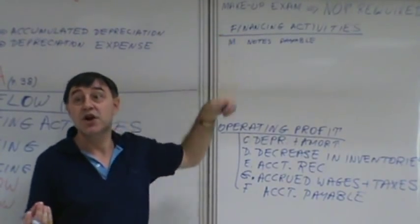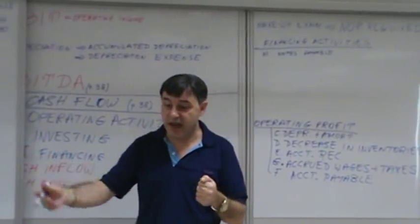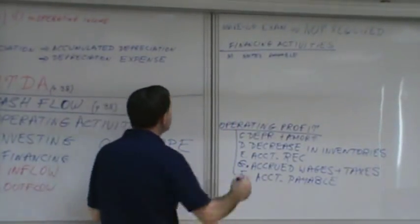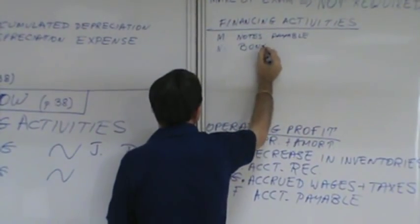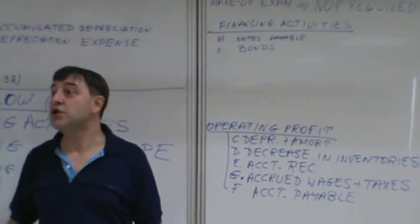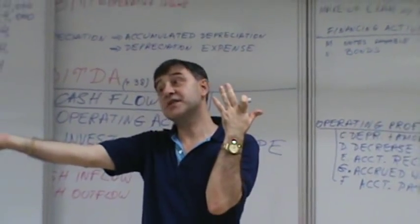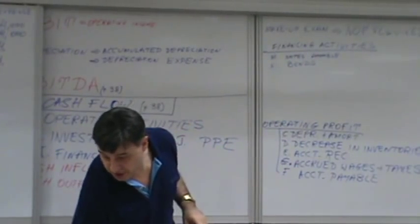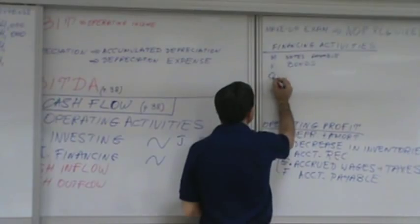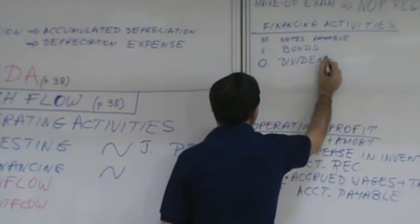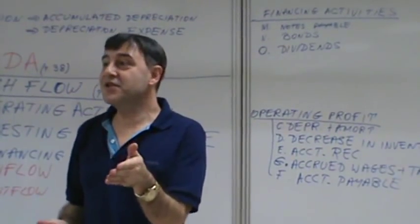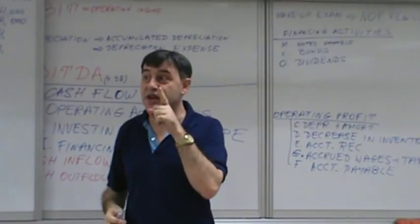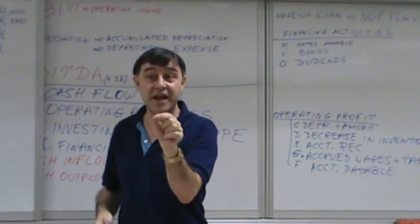Similarly, N — bonds outstanding: if you issue more bonds, you raise more cash — it's that simple. Then there is O — dividends: when you pay a dividend, cash goes down. This is why dividends appear as a negative number in the cash flow statement — paying a dividend is a cash outflow.